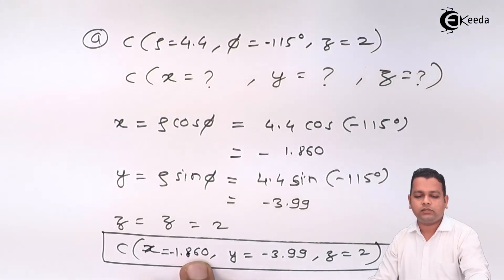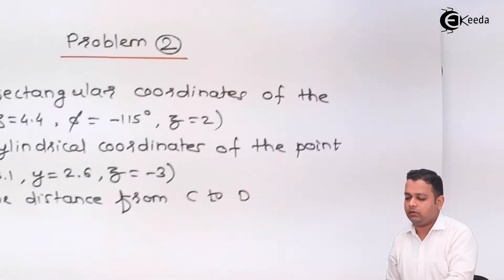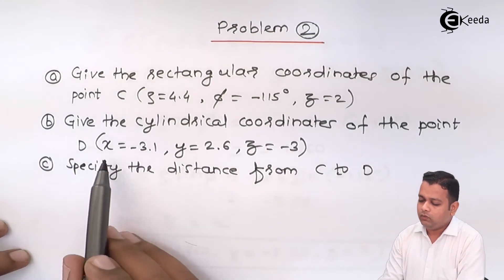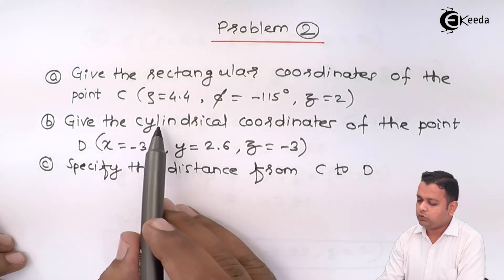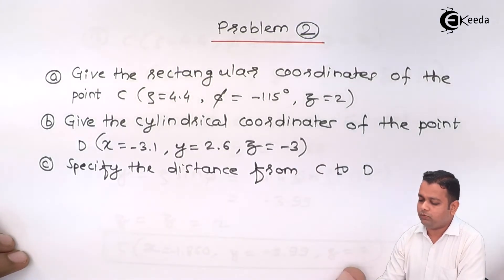Now, let us solve the part B. Part B here, we are given x, y, z values of D and asked to find out the cylindrical coordinates of the point.